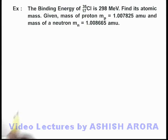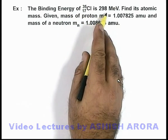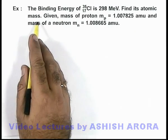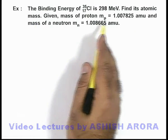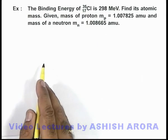In this example we are given that the binding energy of chlorine nucleus is 298 million electron volt and we are required to find its atomic mass. Given that mass of proton and that of neutron are already given here in amu.